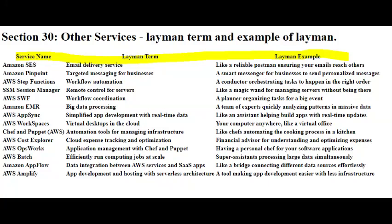Imagine you have a gigantic pile of documents and you need to analyze each one to find specific information. Doing this on a regular computer might take a really long time because there's just so much to go through. AWS Batch is like having a team of super-fast assistants who can read through multiple documents simultaneously. You tell AWS Batch what task you want to perform, like analyzing text or processing images, and it takes care of dividing the work among these super-assistants, making the whole process much quicker. It's like having a group of experts working together to process a massive amount of data, allowing you to get your results faster and more efficiently.